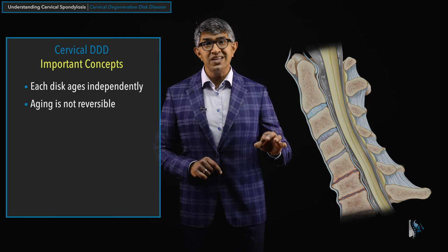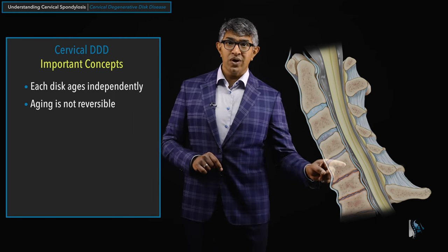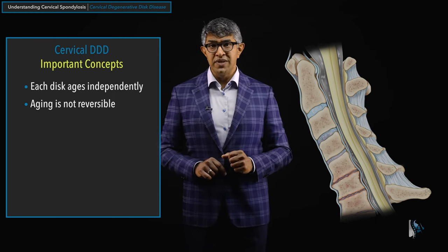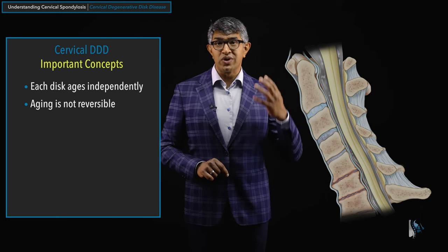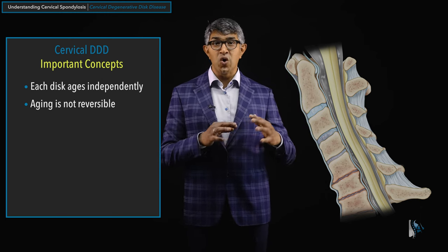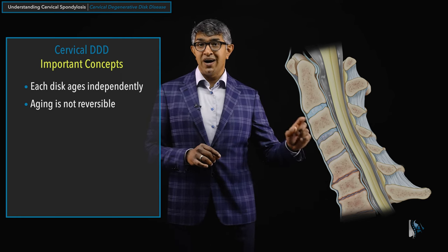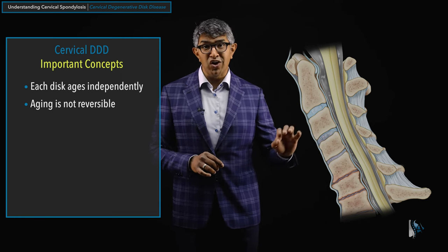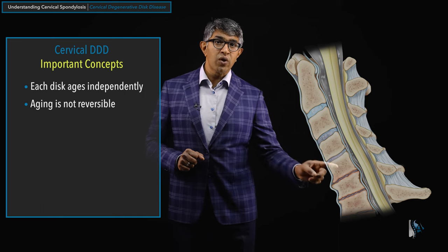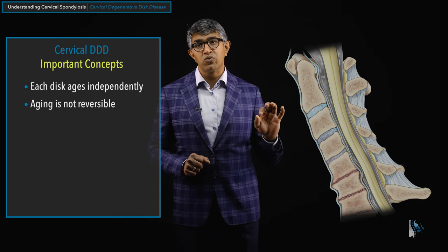Unfortunately, aging is not reversible. As these discs wear out, there's no putting disc material back into them. Like gray hairs and wrinkles, it doesn't go in the other direction. There is no Botox for these discs to make them healthier and younger — at least not yet. So aging is unfortunately not reversible, and the degenerative cascade is unfortunately not reversible.